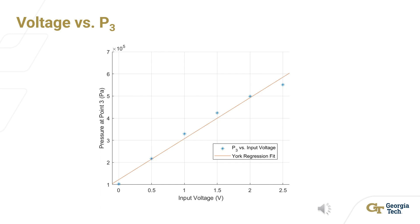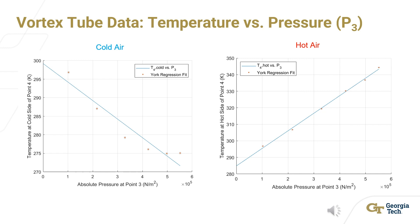The vortex tube outputs separated cold and hot air. These two graphs display the temperature outputs at station 4, the end of the tube. As the pressure increases, the temperature of the hot air continues to increase at a near linear rate. However, the temperature of the cold air does not follow the linear model, leveling off as it reaches the limits of the system towards the higher pressure values. Overall, considering the goal is to cool the aluminum block, this indicates that the system reaches its limits during those higher pressure values and will not reach any cooler temperatures even with an increase in pressure or voltage.